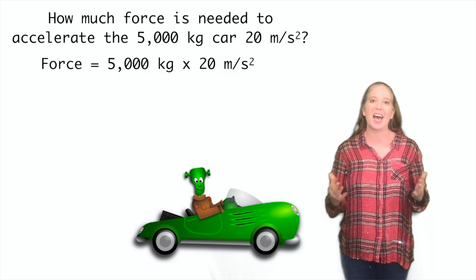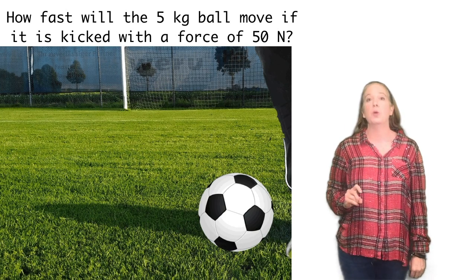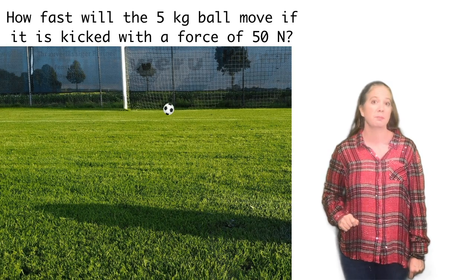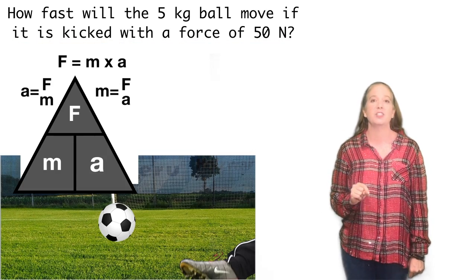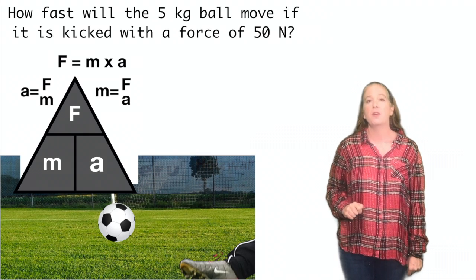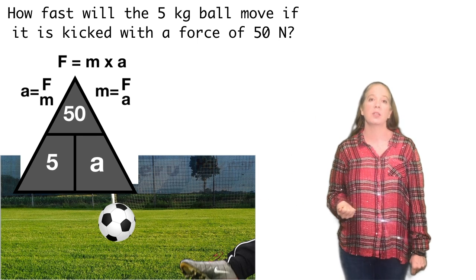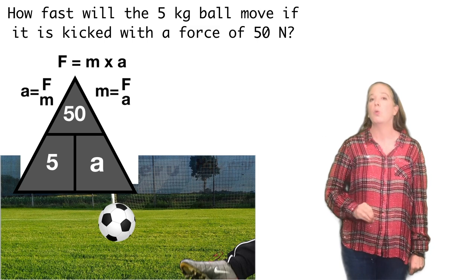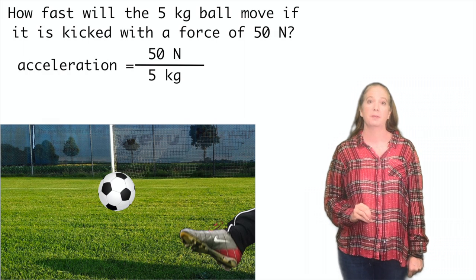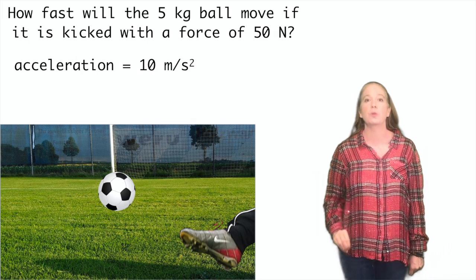and that gives us a force of 100,000 newtons. How fast will the 5 kilogram ball move if it is kicked with a force of 50 newtons? Again, let's use the triangle. We plug in what we're given. The force is 50 newtons, the mass is 5 kilograms. So pulling it out, we know that acceleration is going to be 50 newtons divided by 5 kilograms. This gives us an acceleration of 10 meters per second squared.